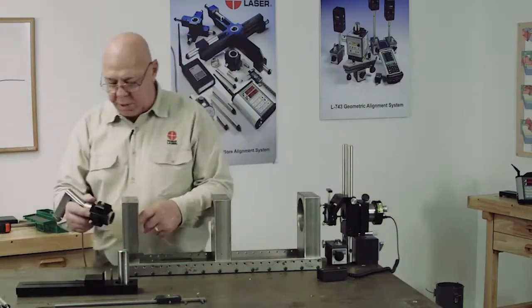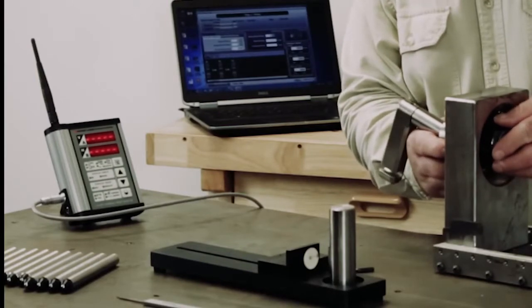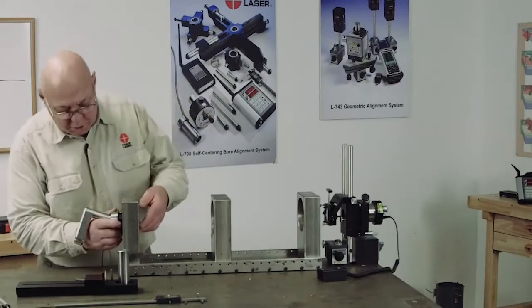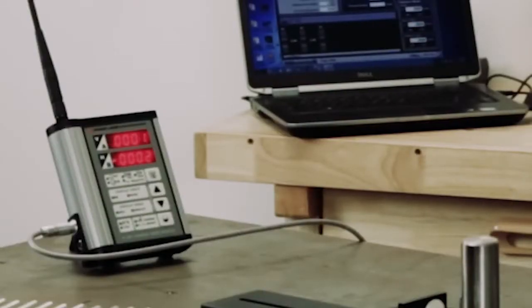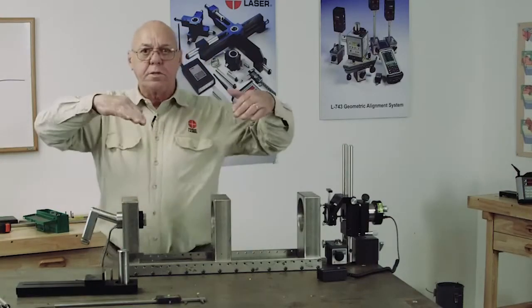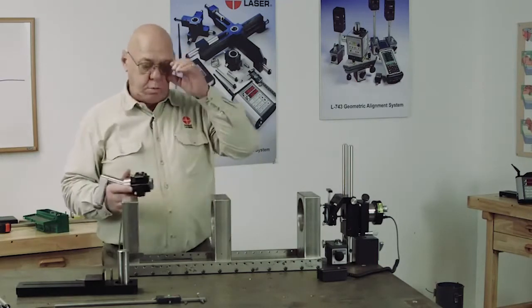The same way here, I measured in the back, and I'm pretty much at zero. If I move this to the front, I can see I'm two thousandths low in the front. This is the opposite. So we can actually measure the angle of the bores that way as well.